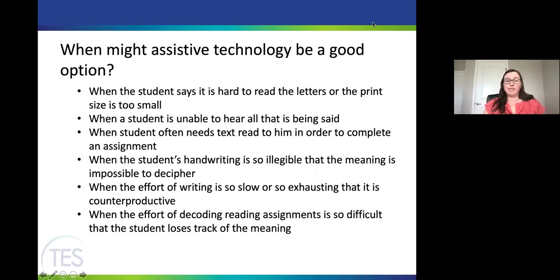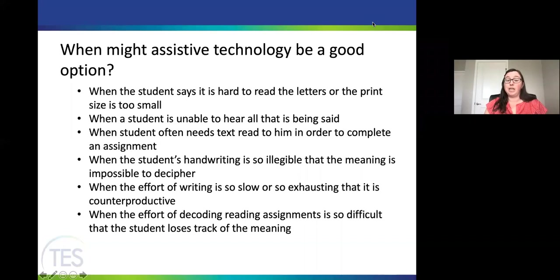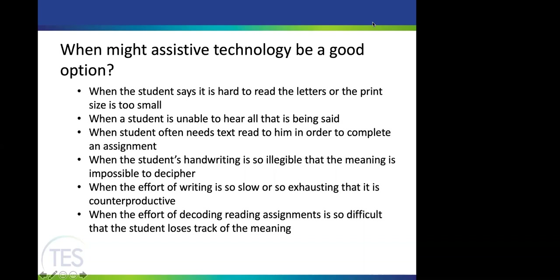It's important to look at who might assistive technology be a good option for. Some things we often hear are that a student might say it's too hard to read the letters, or the print is too small — especially when trying to read something from the board or on the computer. Sometimes students will tell us they aren't able to hear everything being said, or maybe a student needs text read to them in order to complete the assignment.